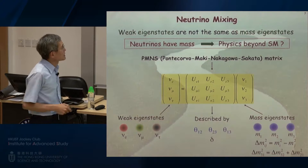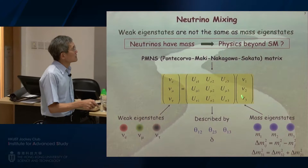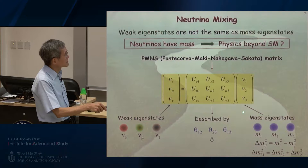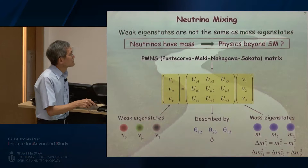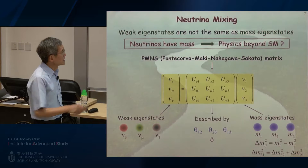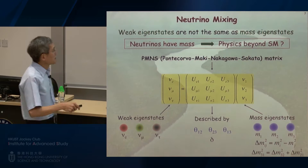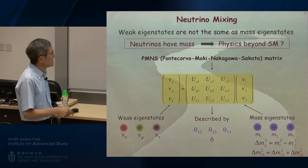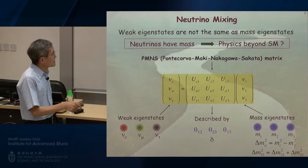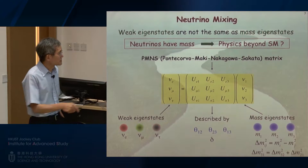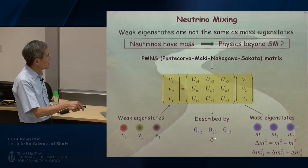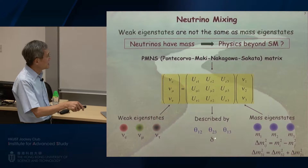The electron neutrino is actually a linear combination of three neutrinos with definite masses — what we call the mass eigenstates — labeled one, two, and three. Mathematically, this linear combination is expressed as a matrix called the PMNS mixing matrix. It turns out this three-by-three matrix can be described by only four parameters: three mixing angles theta-12, theta-23, and theta-13, and another parameter called delta, which represents essentially a phase.